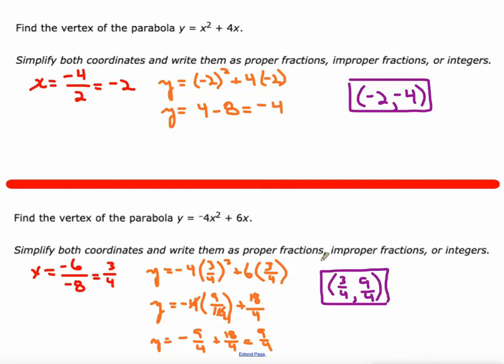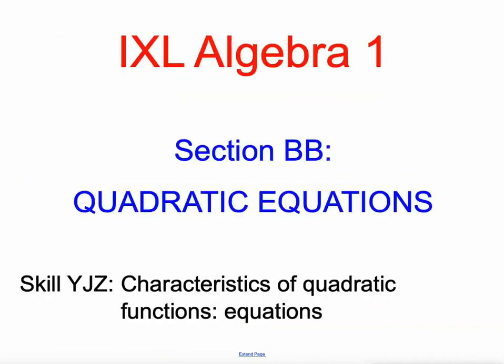Alright, so all those examples should help you with skill 2 of section BB in quadratic equations. That's IXL's algebra 1 skills. Good luck, negative b over 2a.